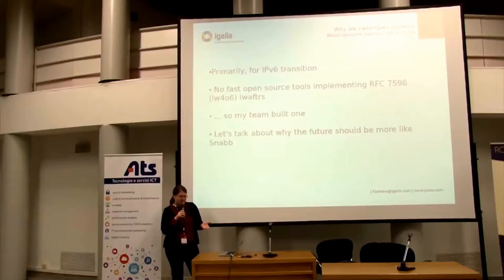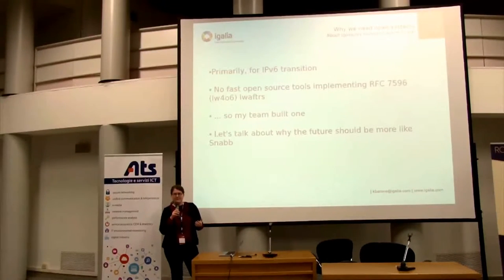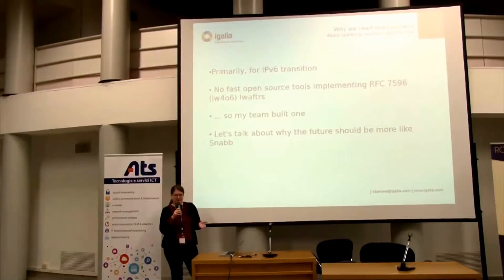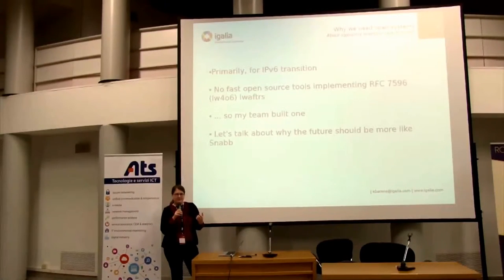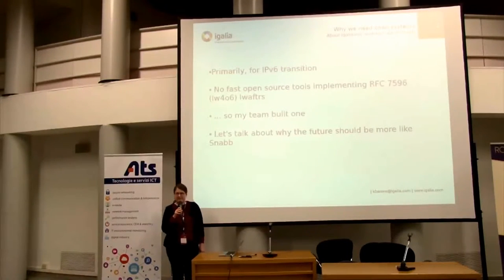My team has been using Snab for IPv6 transition tools. Specifically, there weren't any fast open source implementations of something called Lightweight 4 over 6, which is a variation of DS Lite — and specifically a part of that called Lightweight Afters. So my team went and built one. We managed to do this relatively quickly with quite a small team. I want to talk about why Snab lets small teams do things like that and how we can have other systems provide the same capabilities to different teams.